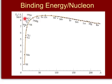Here is another graph showing binding energy per nucleon. Once again, iron is here, very high.